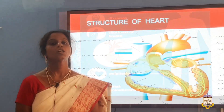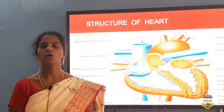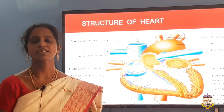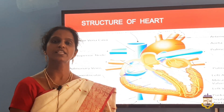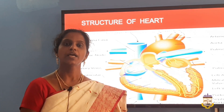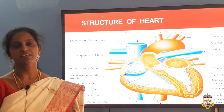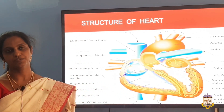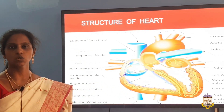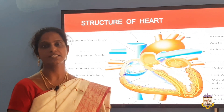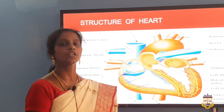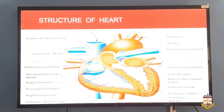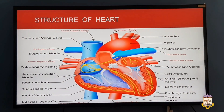Now we are going to see the structure of the heart. The heart is a muscular organ, conical in shape. It weighs about 300 grams in men and 250 grams in women. It is enclosed in a sac called the pericardium. Have a look at the picture, which clearly shows the structure of the heart.